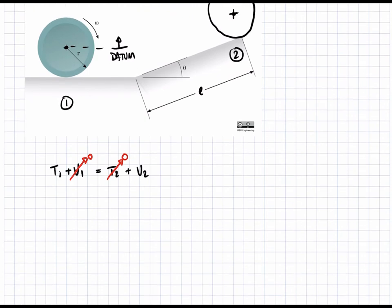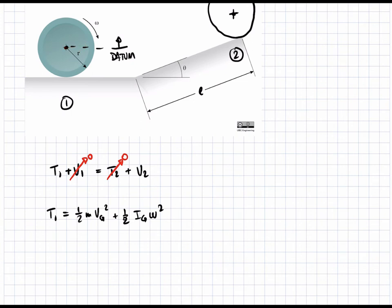Let's calculate T1, the kinetic energy at state one. T1 equals one-half m·vg² plus one-half Ig·ω². There are two components: the translational component involving the velocity of the center of gravity, and the rotational kinetic energy about the center of gravity. The addition of the two gives the total kinetic energy. We need to calculate both vg and Ig.